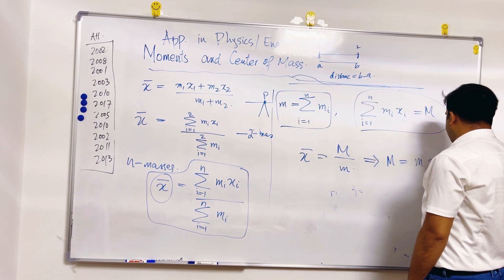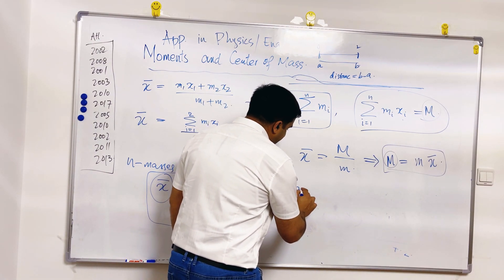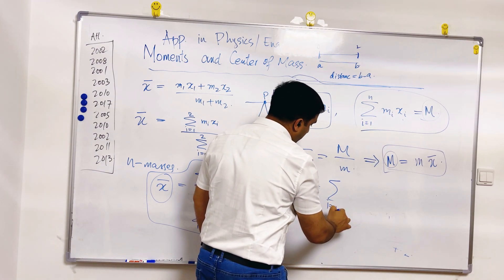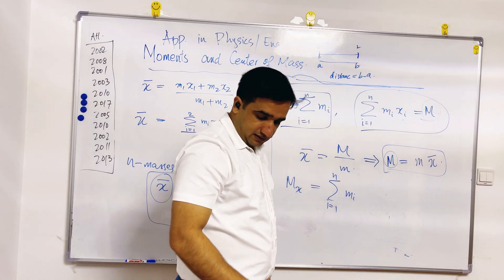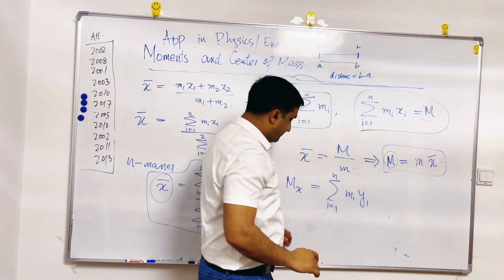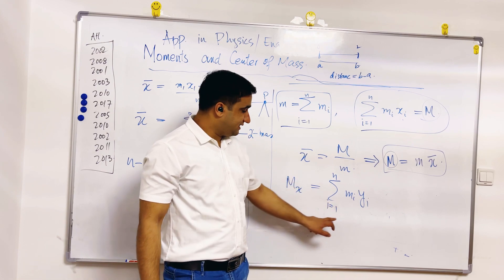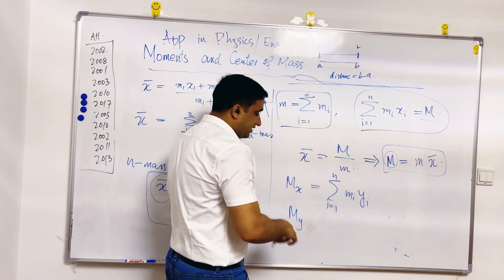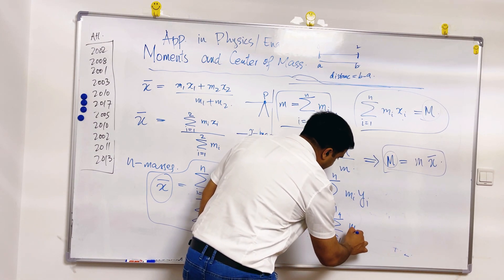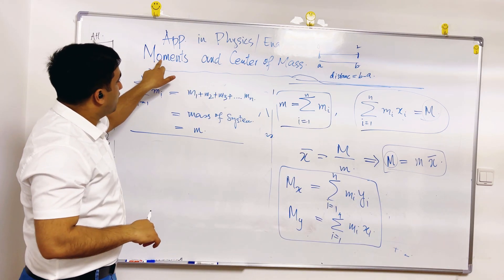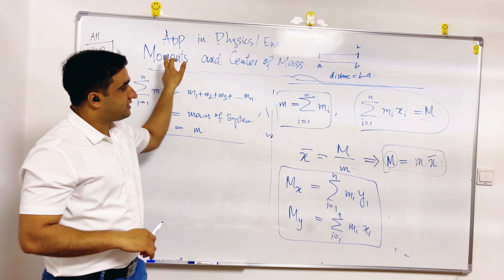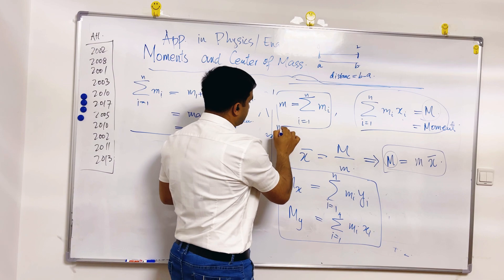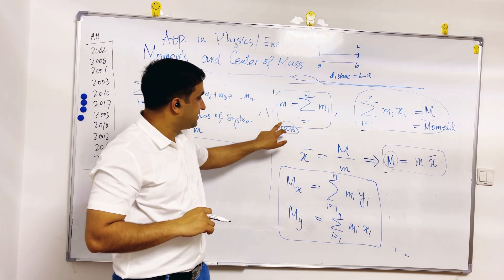Talking about the x-axis: Mx = Σ m_i·y_i, which is the tendency of the object to rotate about the x-axis. Similarly, the tendency of the object to rotate about the y-axis is My = Σ m_i·x_i. These moments are denoted by capital M, while small m represents the total mass of the system.